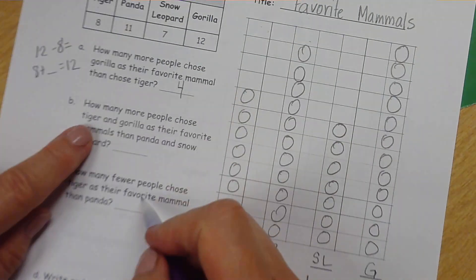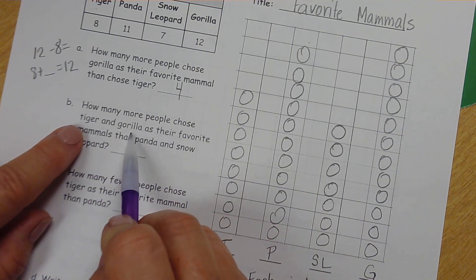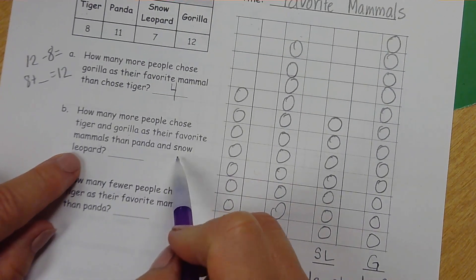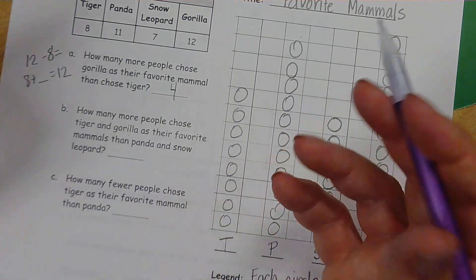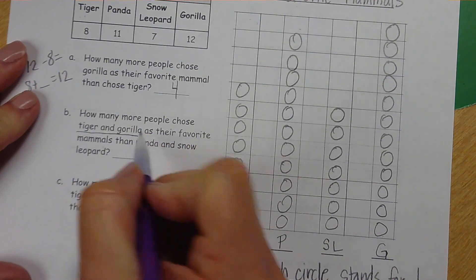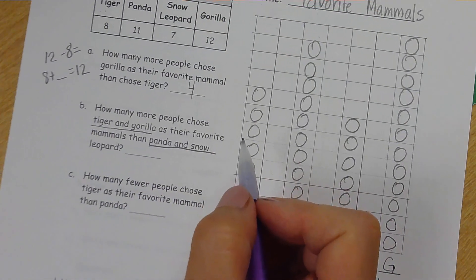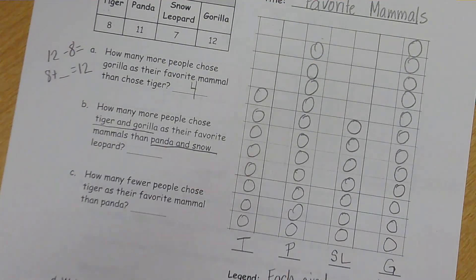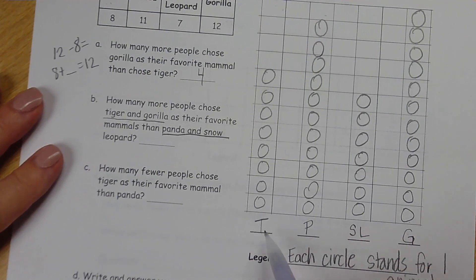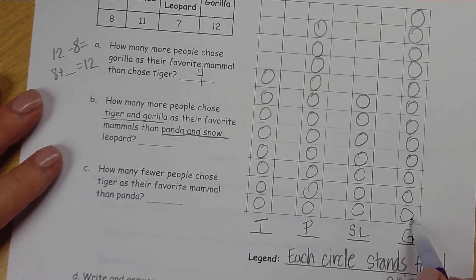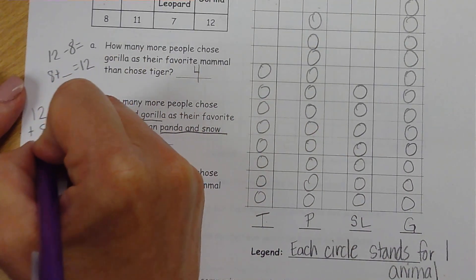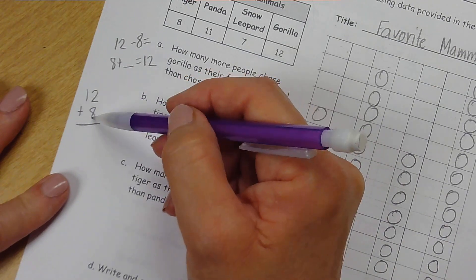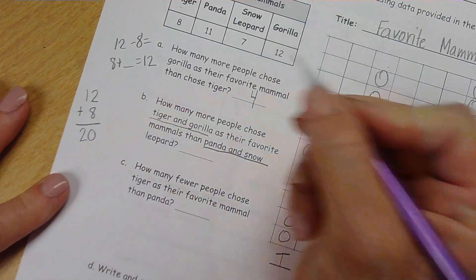The next one is also a comparison question. How many more people chose tiger and gorilla as their favorite mammals than panda and snow leopards? We are not going to just have to figure out the difference. We have to figure out what those two numbers are because we have to add tiger and gorilla together, and then panda and snow leopard together. Then we can compare and find the difference. Tiger had 8, gorilla had 12. We need to add together 12 plus 8. If we are adding our ones, 2 and 8 is 10. So we have a 10 here and we have a 10 here. That is 20.